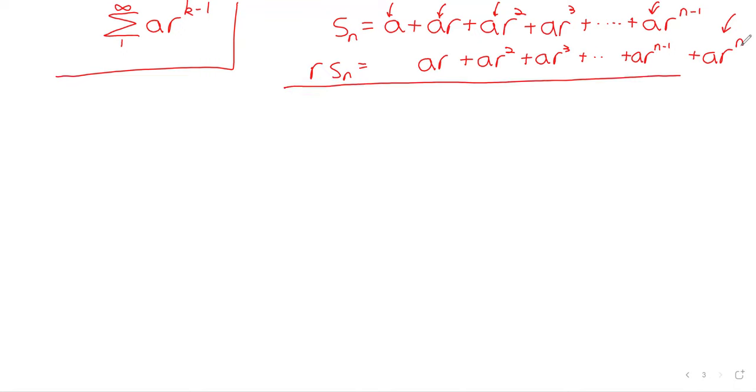So when we multiply a by r, we get a times r. When we multiply ar by r, we get ar squared. ar squared by r gives ar cubed, and so on. And then we get one term that we didn't have before. When we multiply a times r to the n minus one by r, it becomes ar to the n. And now we subtract s sub n minus r times s sub n.